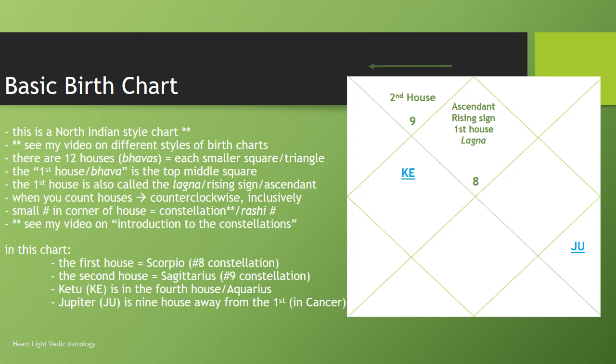I also made another video — if you're not familiar with constellations, you're going to need to know the order of the constellations and their names to start looking at birth charts if that's what you're interested in doing. I've created a video on introductions to constellations so you know the order, the number, the names, and the symbols. So in this chart, the lagna, the rising sign, the ascendant, the first house, is Scorpio — the eighth constellation of the zodiac.